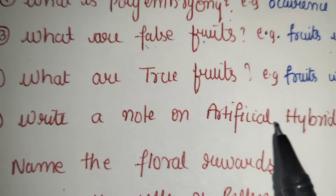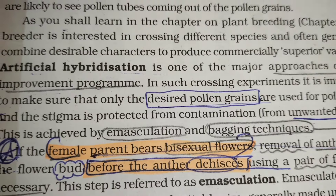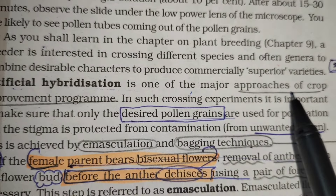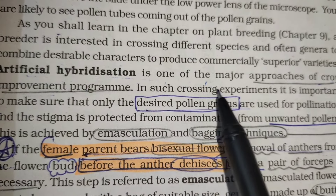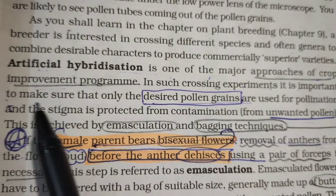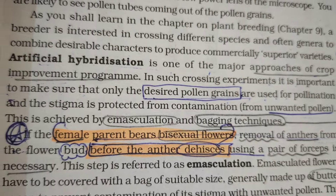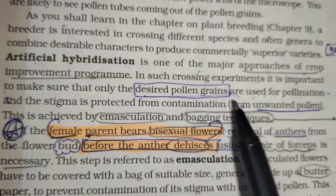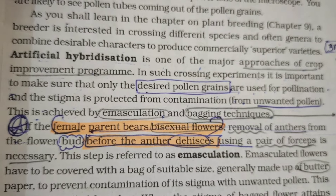Write a note on artificial hybridization and its techniques. Artificial hybridization is one of the major approaches of crop improvement programs. In such crossing experiments, it is important to make sure that only the desired pollen grains are used for pollination and the stigma is protected from contamination. This is achieved by emasculation and bagging techniques.